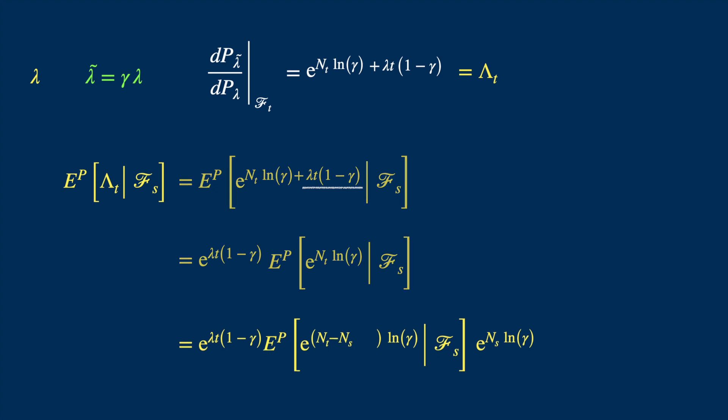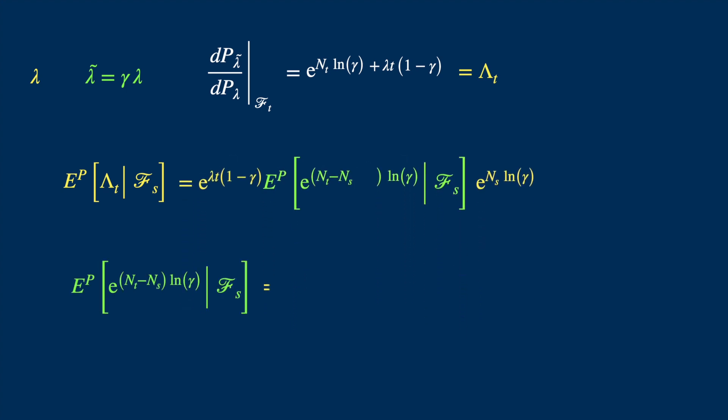Now to calculate the expectation, we know that N_t minus N_s is Poisson distributed with parameter lambda times the length of the interval, which is now t minus s. And we then know that the expected value of a function of a discrete random variable is equal to the function value times the probabilities. So it's the same Poisson probability density except that we have lambda times t minus s in place of lambda times t.